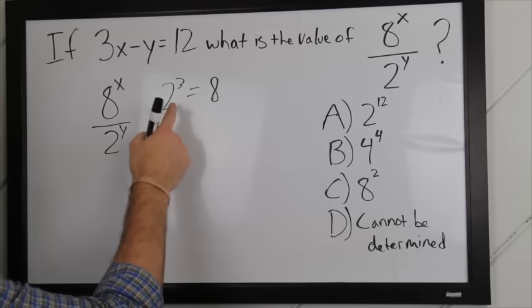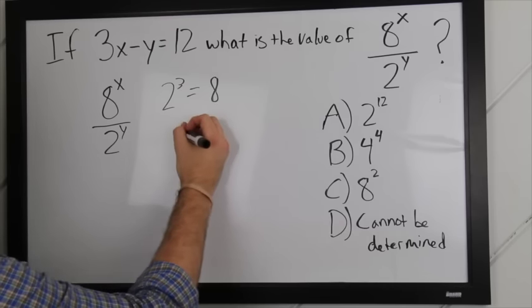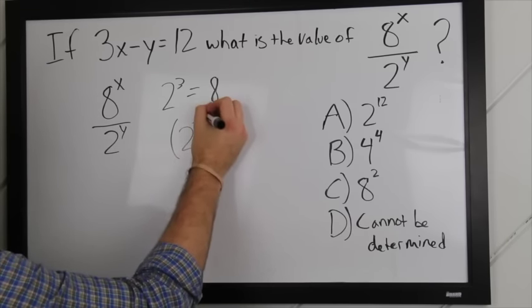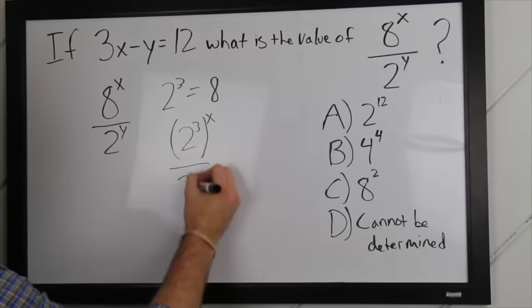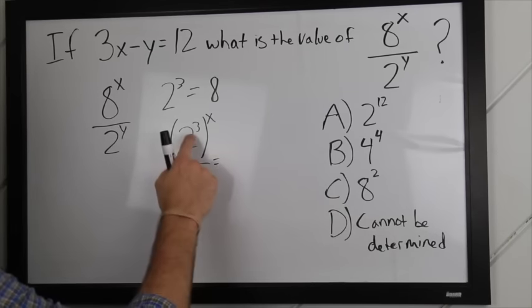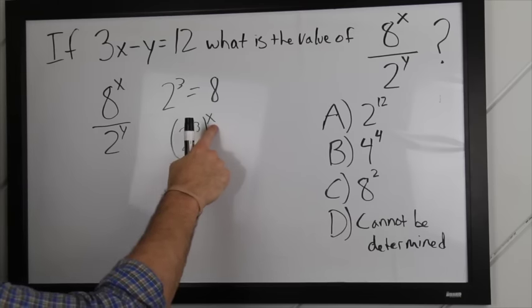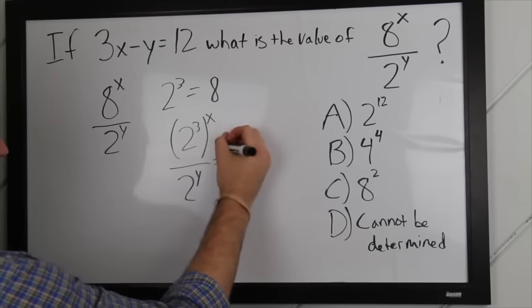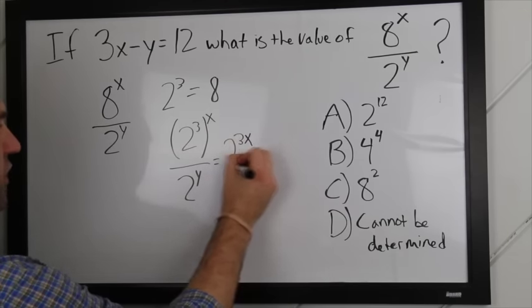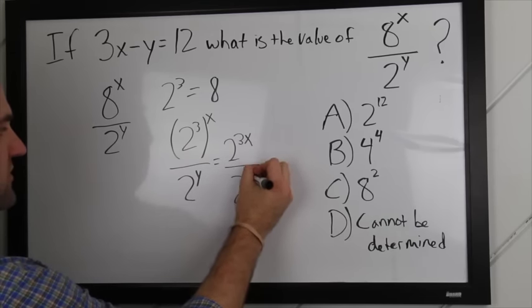Therefore, if we substitute in 2 to the 3rd for 8, we can rewrite this as 2 to the 3rd to the x power over 2 to the y. Then, if we rewrite it again here, this is 2 to the 3rd times the x, so 2 to the 3x over 2 to the y.